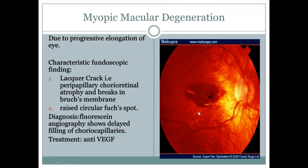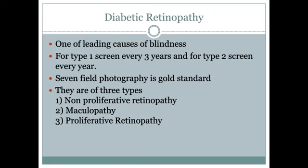Diagnosis of myopic macular degeneration is by fluorescein angiography, which will show delayed filling of choriocapillaries because the choriocapillaries have atrophied. Treatment is anti-VEGF.